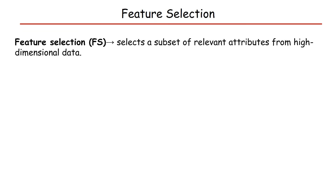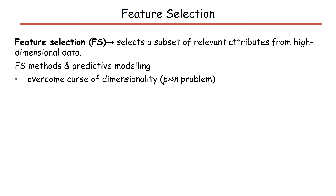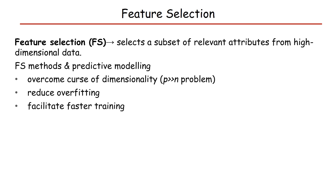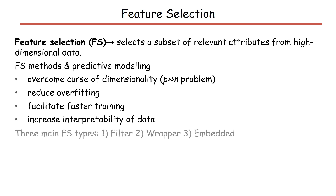Feature selection in machine learning refers to selecting a subset of relevant attributes from high-dimensional data. Feature selection methods are used in predictive modeling to overcome the curse of dimensionality, or the P greater than N problem — where there are far more covariates than sample points — and also to reduce overfitting, facilitate faster training, and increase interpretability. Generally, feature selection methods can be categorized into three types: filter, wrapper, and embedded.